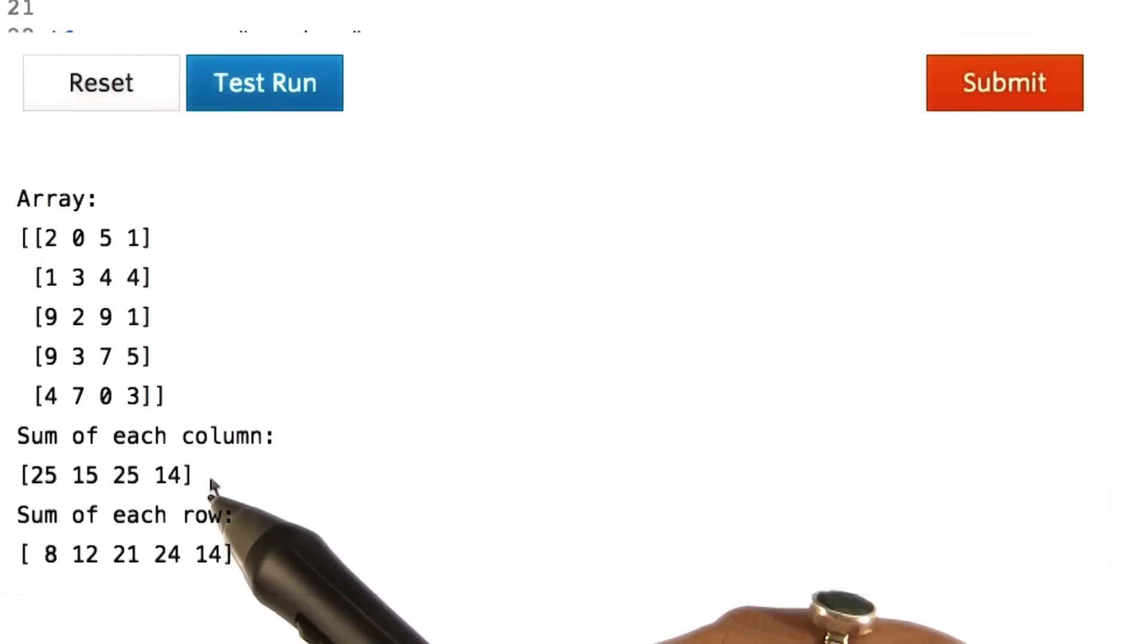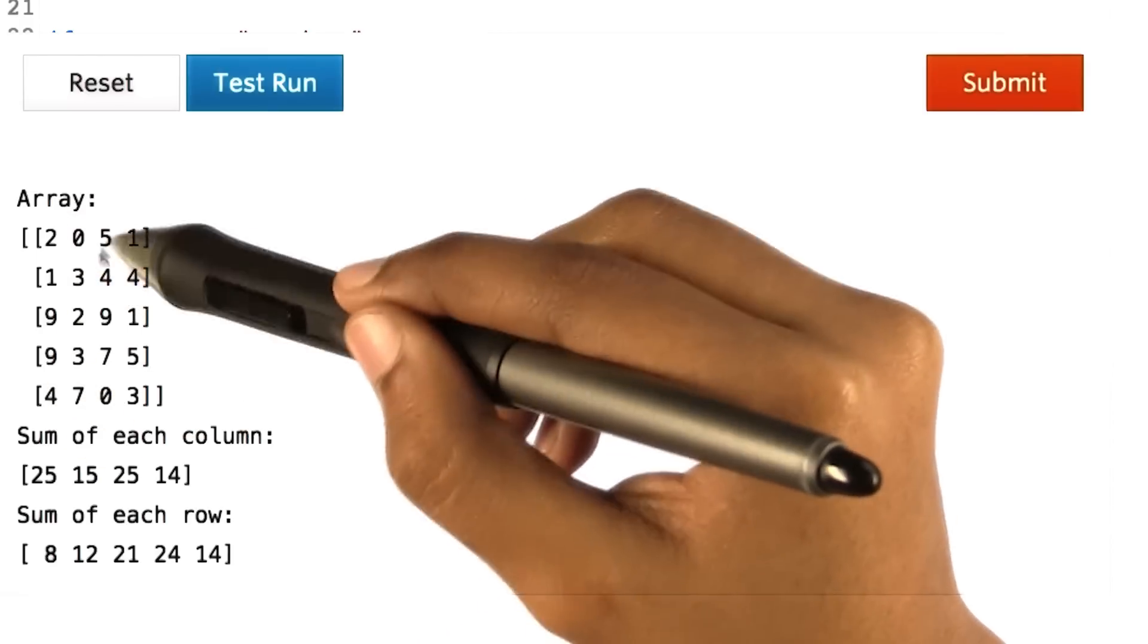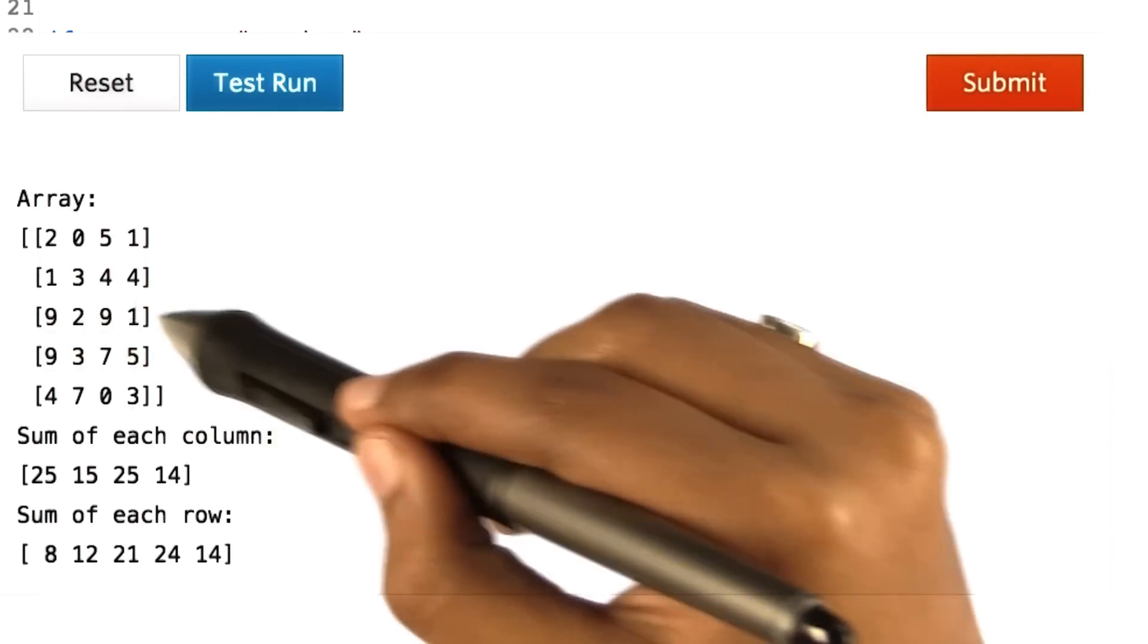Observe the output when we pass axis equal to zero. We get four values, these are basically the sum of each column. And when we pass axis equal to one, we get five values which are the sum of each row.